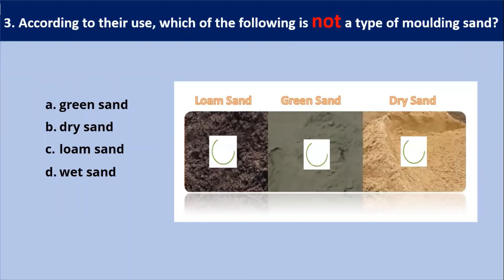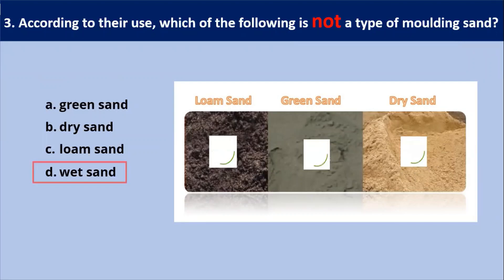Next question: according to their use, which of the following is not a type of molding sand? As shown in this diagram, loam sand, green sand, and dry sand are types of molding sand, but wet sand is not a type of molding sand. Our answer is D — wet sand.